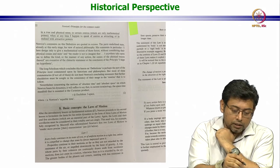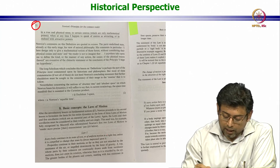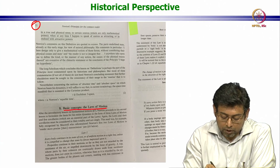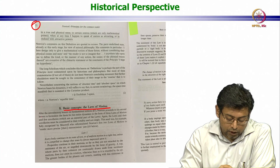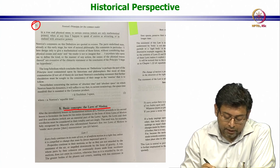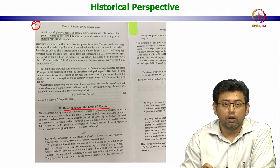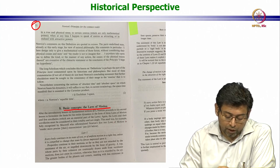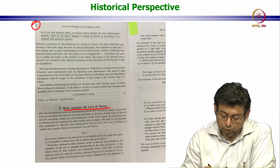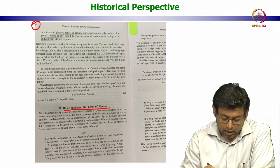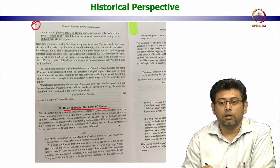This is from page 22 of Chandrasekhar's book, talking about the basic concepts and the laws of motion. He says: after the introductory lesson of fundamental notions, Newton proceeds to formulate the basis of his entire dynamics in the form of three laws of motion and five corollaries. The laws and their corollaries must be considered in totality. This need was fully recognized by Maxwell, who reformulated Newton's first two laws of motion to render their enunciation more precise.